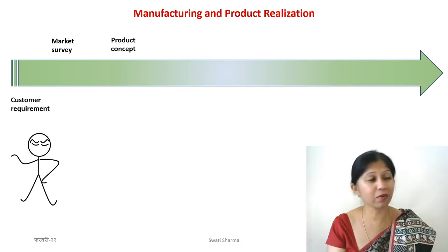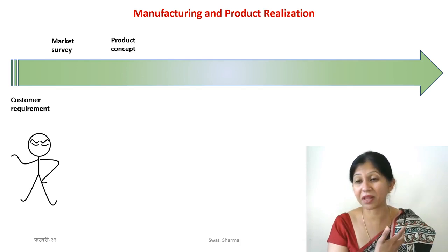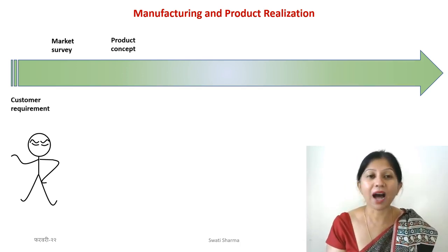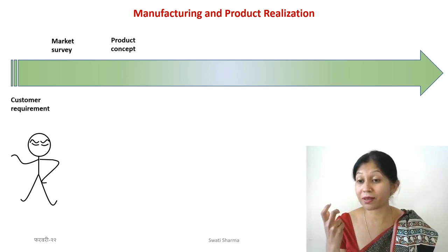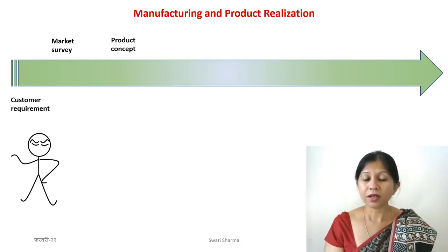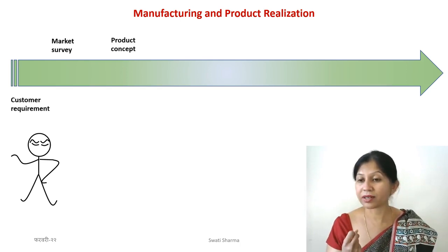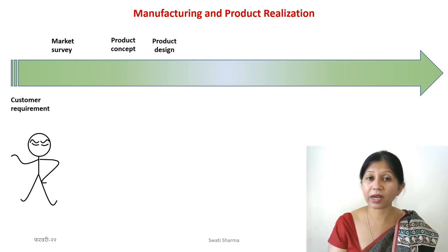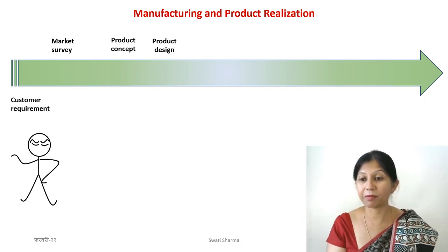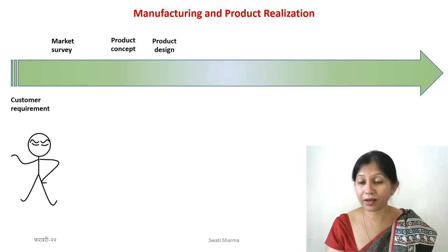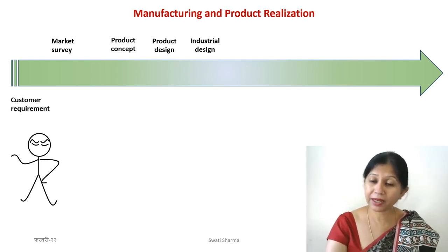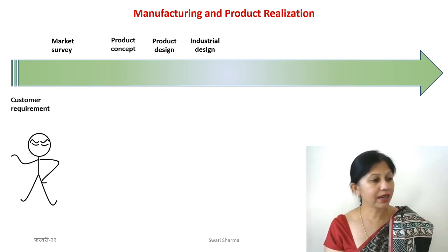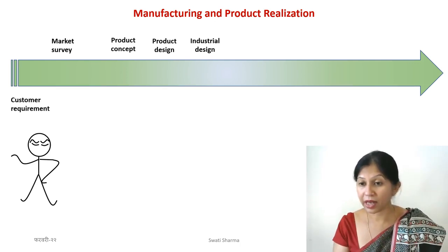After identifying that people want something better, customers often give vague feedback. As an engineer, you think about what product could satisfy that general demand — this is called conceptualization, where the product concept begins. Once you have the idea, such as making a flat screen TV better than existing ones, you then need to determine the design, dimensions, and feasibility.